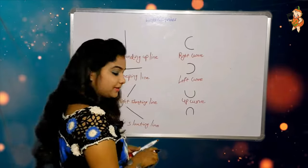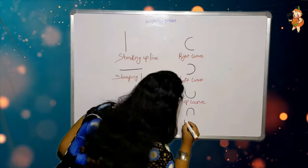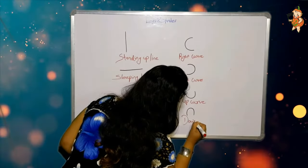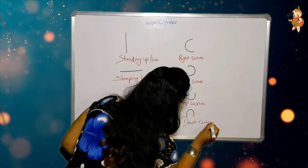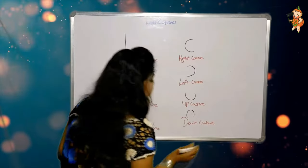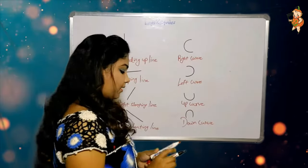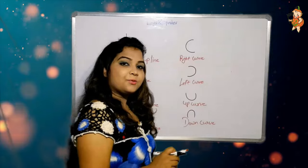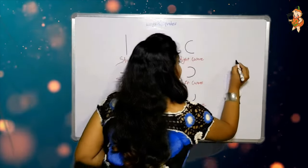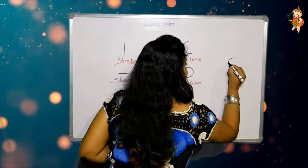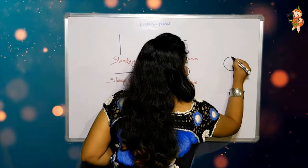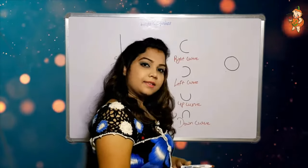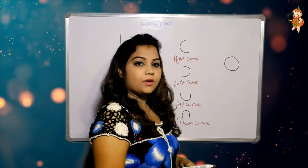Down curve. And my favourite part, the last one — this is a circle, or O.